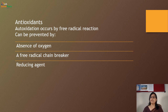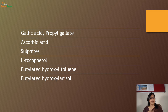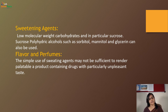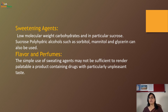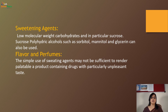Antioxidants: oxidation occurs by free radical reactions and can be prevented by absence of oxygen, use of a free radical chain breaker, and by using a reducing agent. Examples include gallic acid, propyl gallate, ascorbic acid, sulfides, alpha-tocopherol, butylated hydroxytoluene (BHT), and butylated hydroxyanisole (BHA). Sweetening agents: low molecular weight carbohydrates, in particular sucrose, are widely used. Polyhydric alcohols such as sorbitol, mannitol, and glycerin can also be used. The simple use of sweetening agents may not be sufficient, so suitable flavors and perfumes can be added.